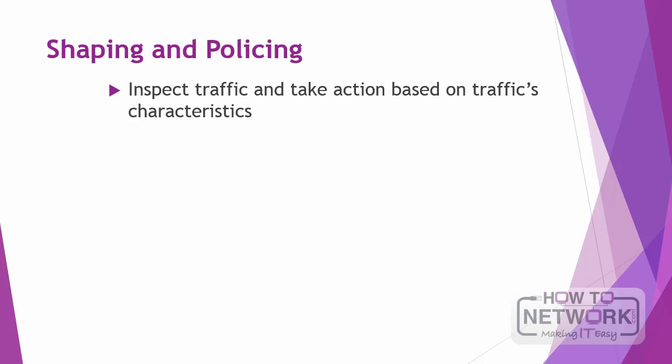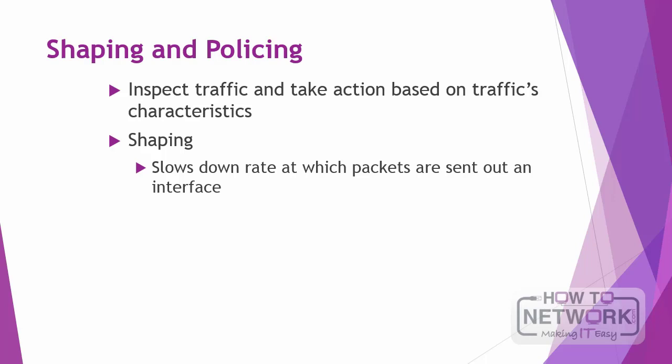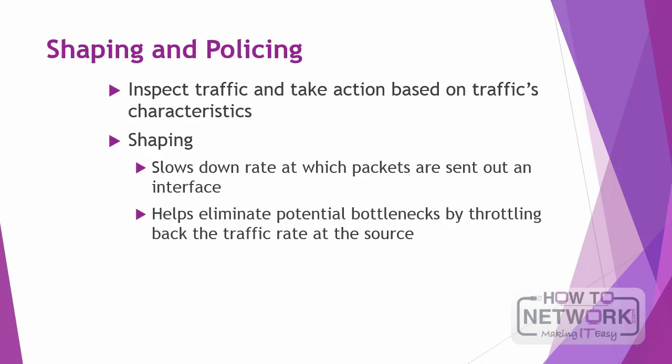Now let's talk about traffic shaping and policing. These are mechanisms that inspect traffic and take action based on the traffic's characteristics, such as DSCP or IP precedence bits set in the IP header. Traffic shaping slows down the rate at which packets are sent out an interface by matching certain criteria. It uses a token bucket technique to release packets into the output queue at a pre-configured rate, helping eliminate potential bottlenecks by throttling back the traffic rate at the source. Traffic shaping is used on larger networks to smooth the flow of traffic going out to the provider.